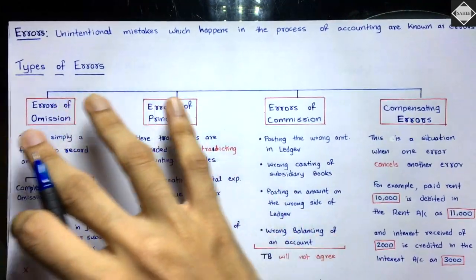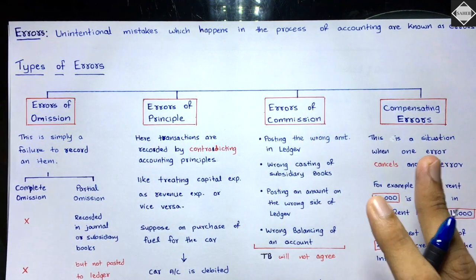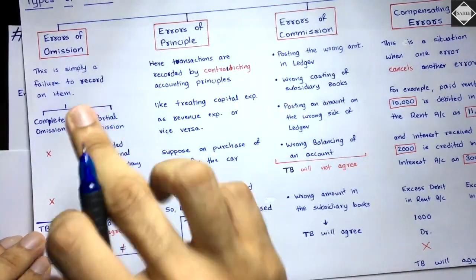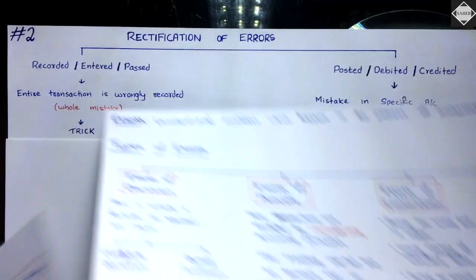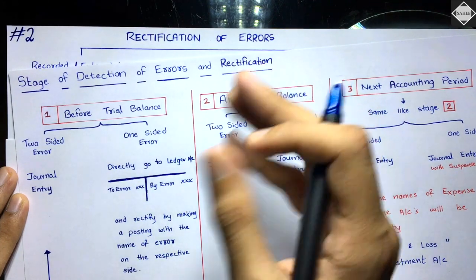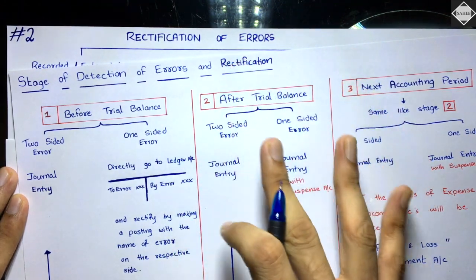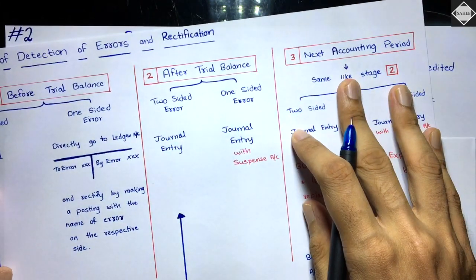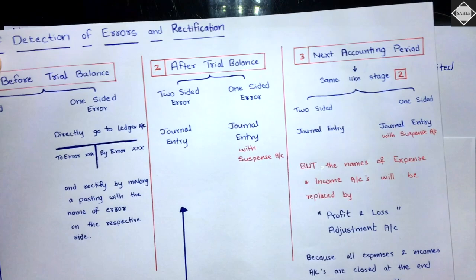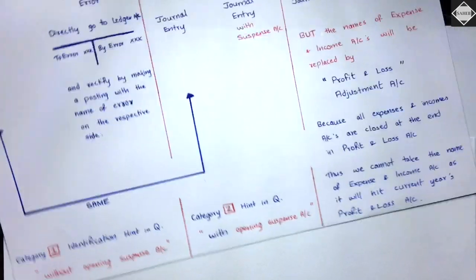We also covered the suspense account — what it is, when it comes into the picture, its purpose, and what to do with it. Then we understood what an error is and compared it with fraud. We discussed the different types of errors, though I told you this is just theory — it's not the main focus. We also discussed the different stages of detection: before trial balance, after trial balance, and in the next accounting period.